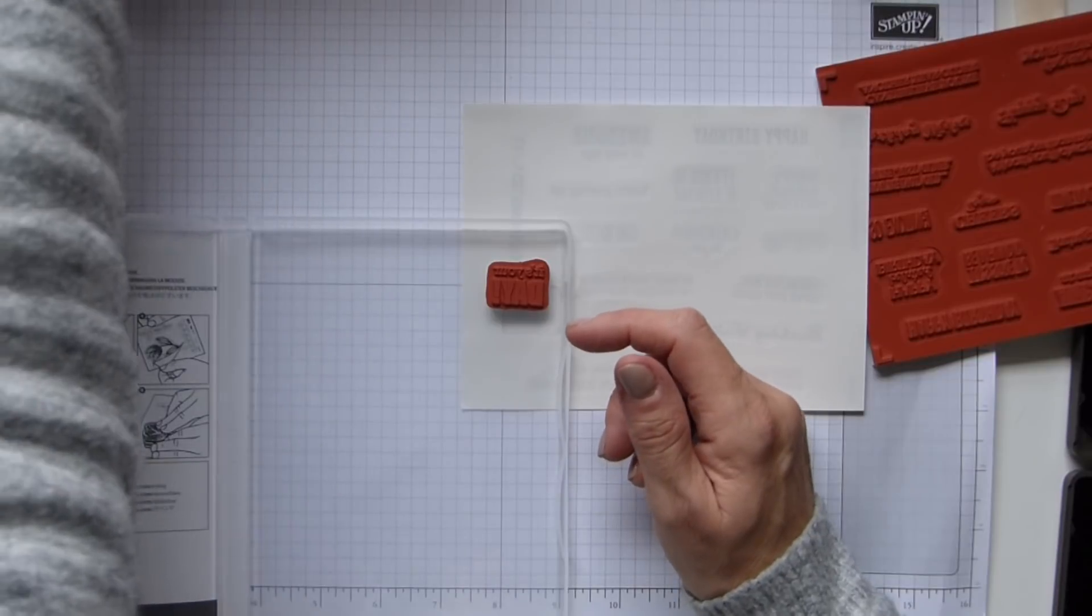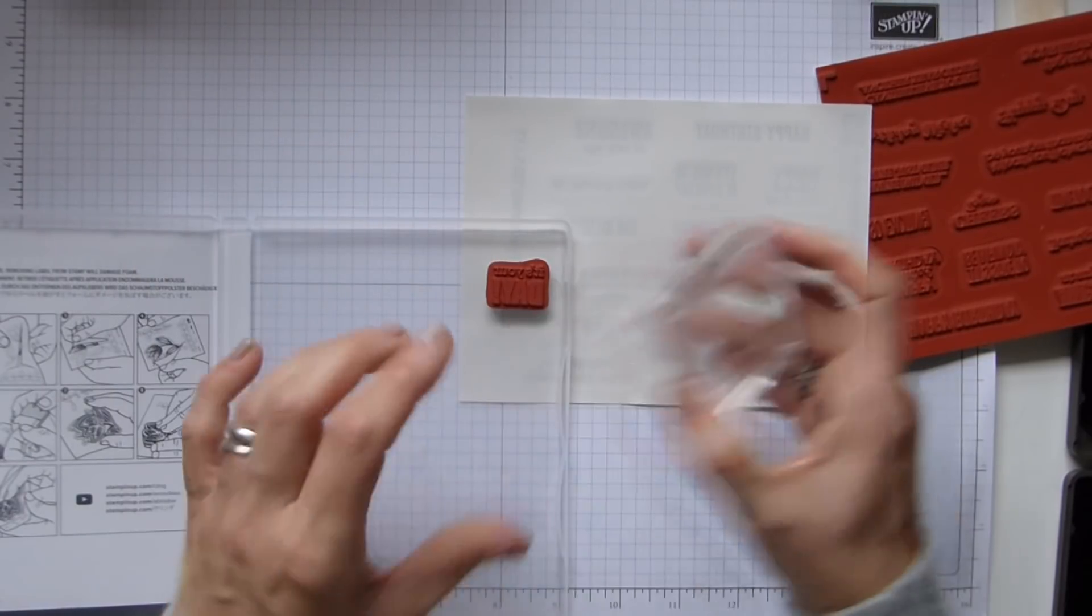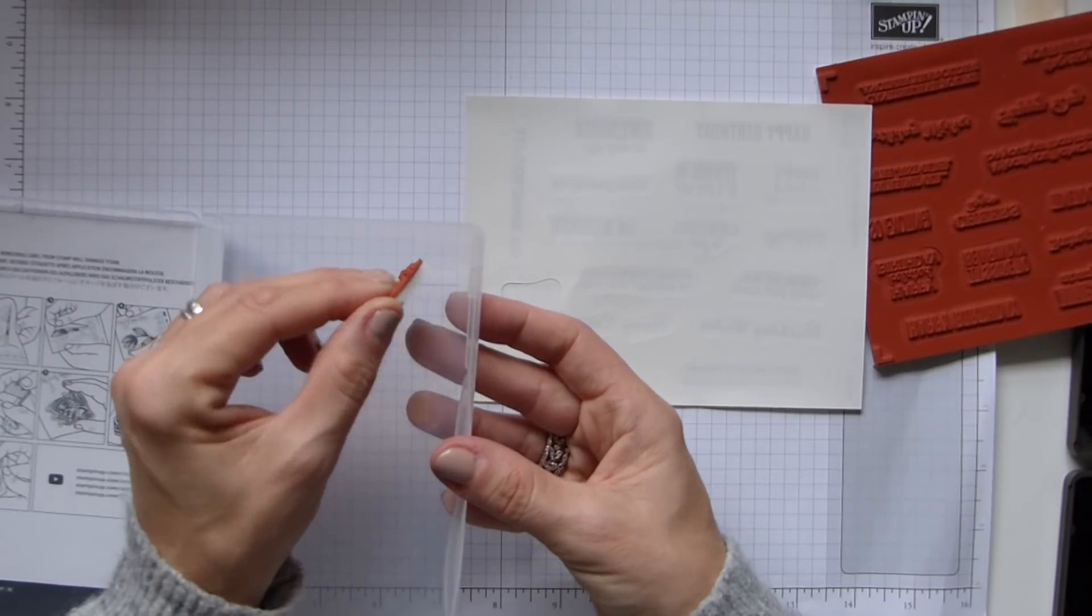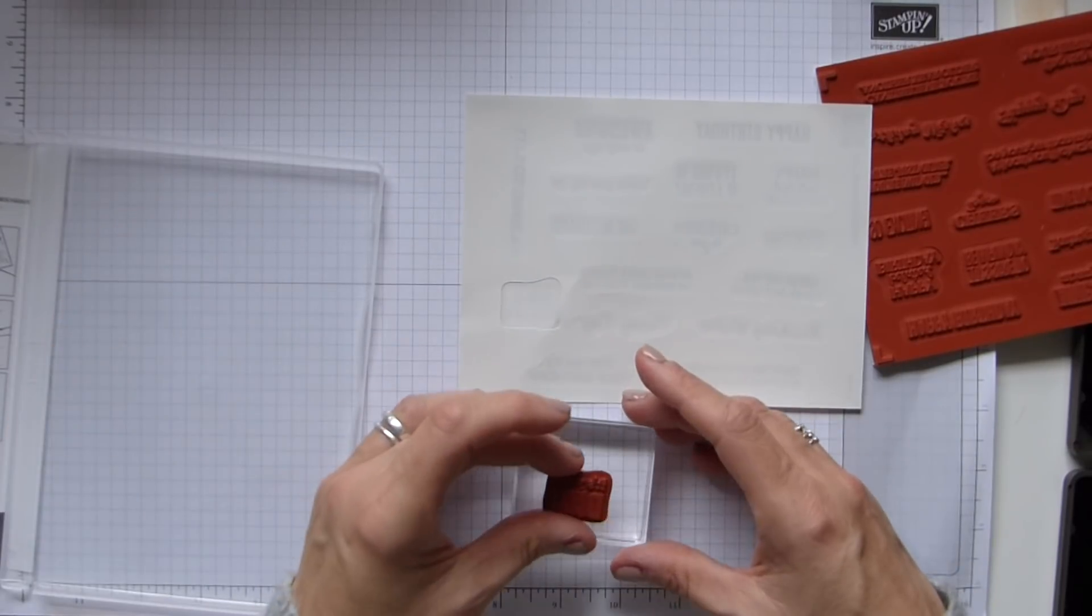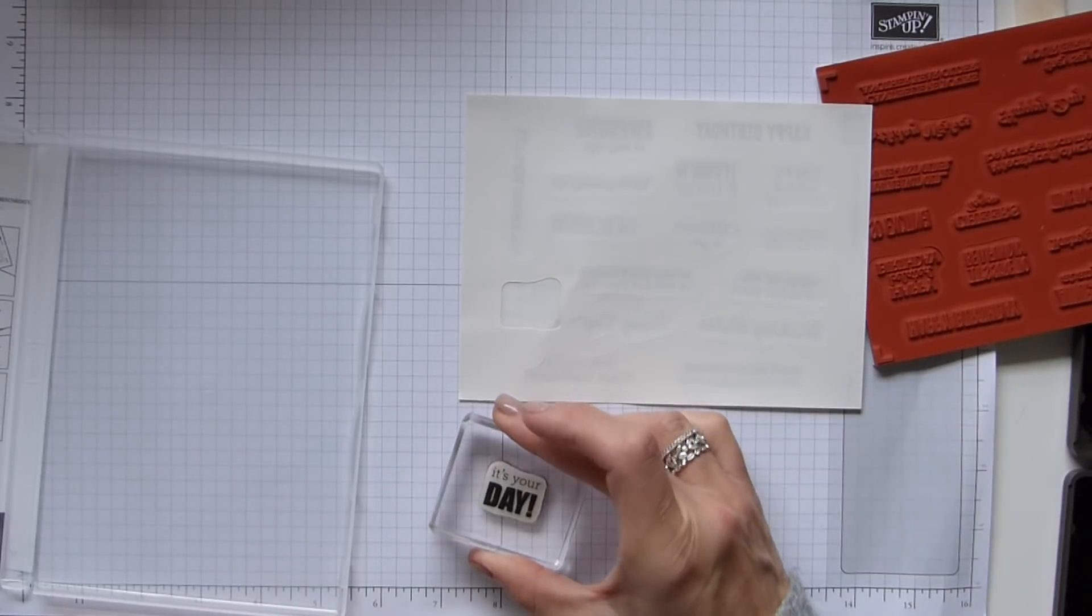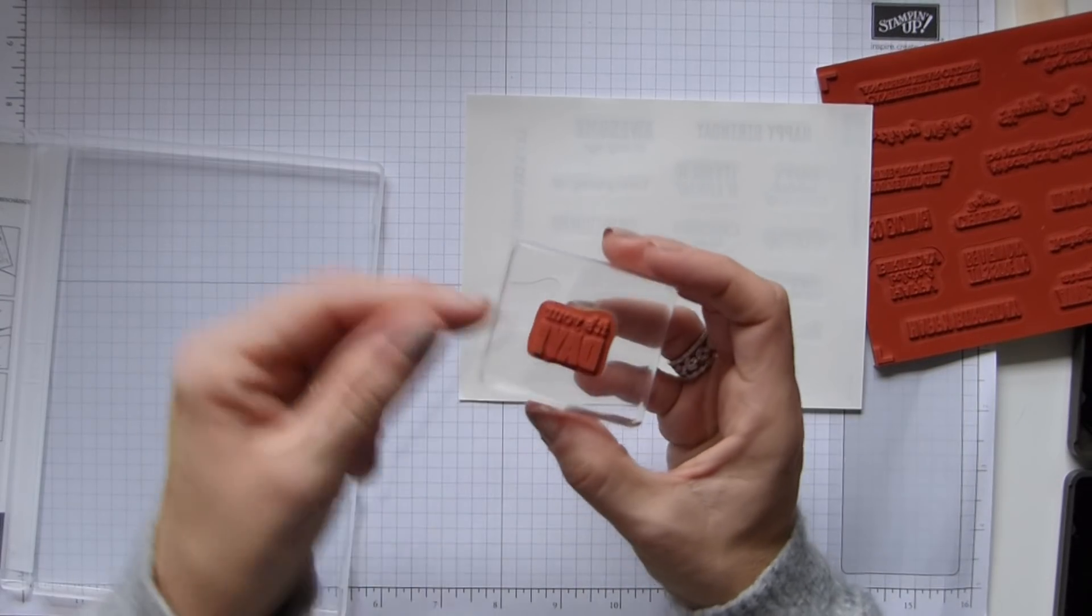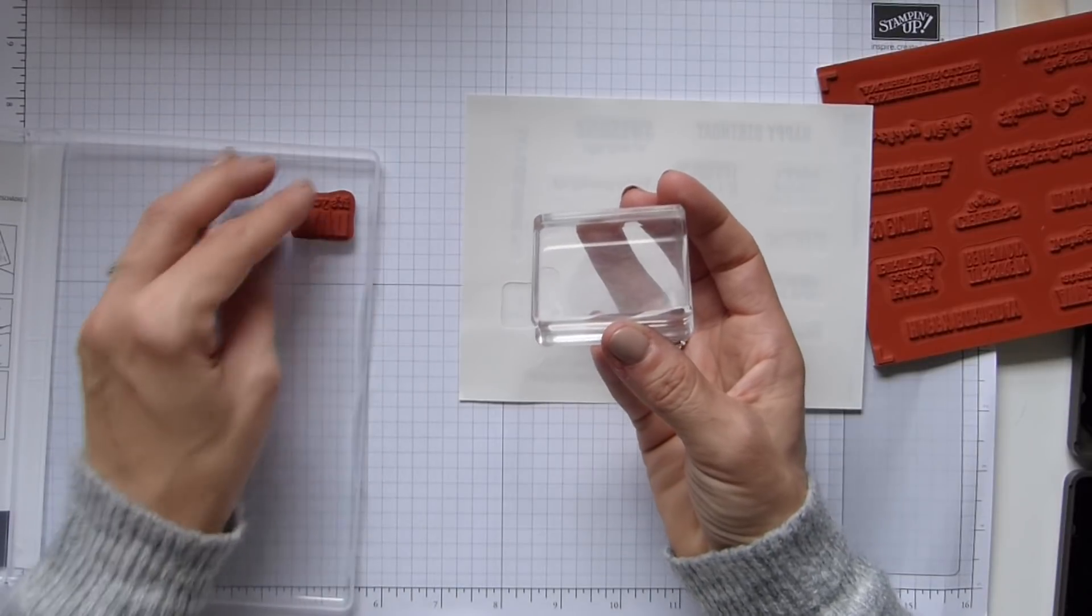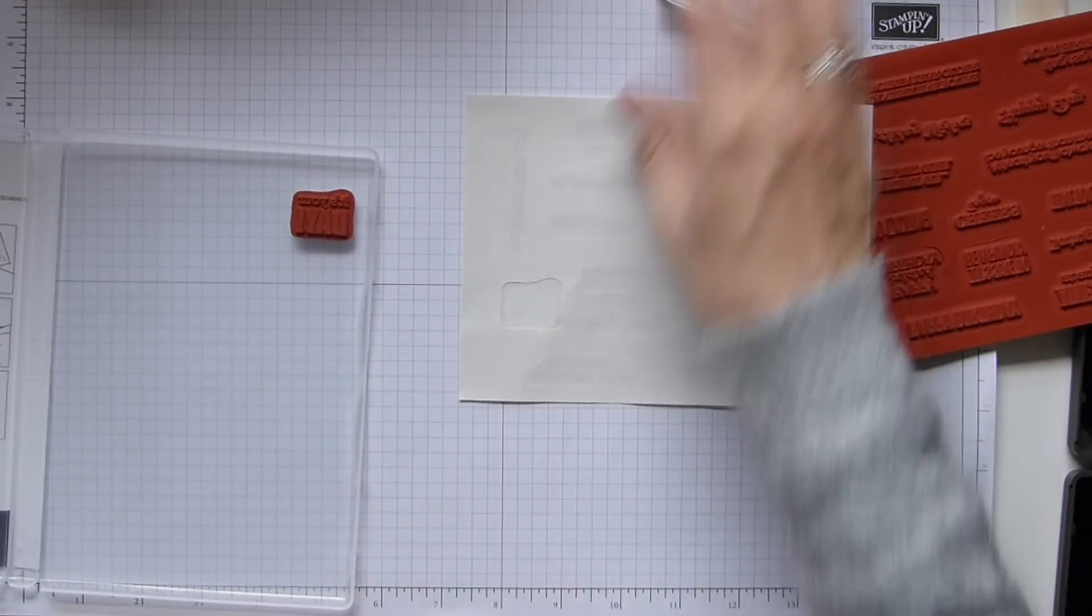When you come to adhere it to a block, you need to again peel from one corner and pop it on your block. So then you will ink it, stamp it, do whatever you need to do. Give it a scrub and a clean, and then when you come to take it off you peel it and put it back in its box. And that is it, cling mount stamps.